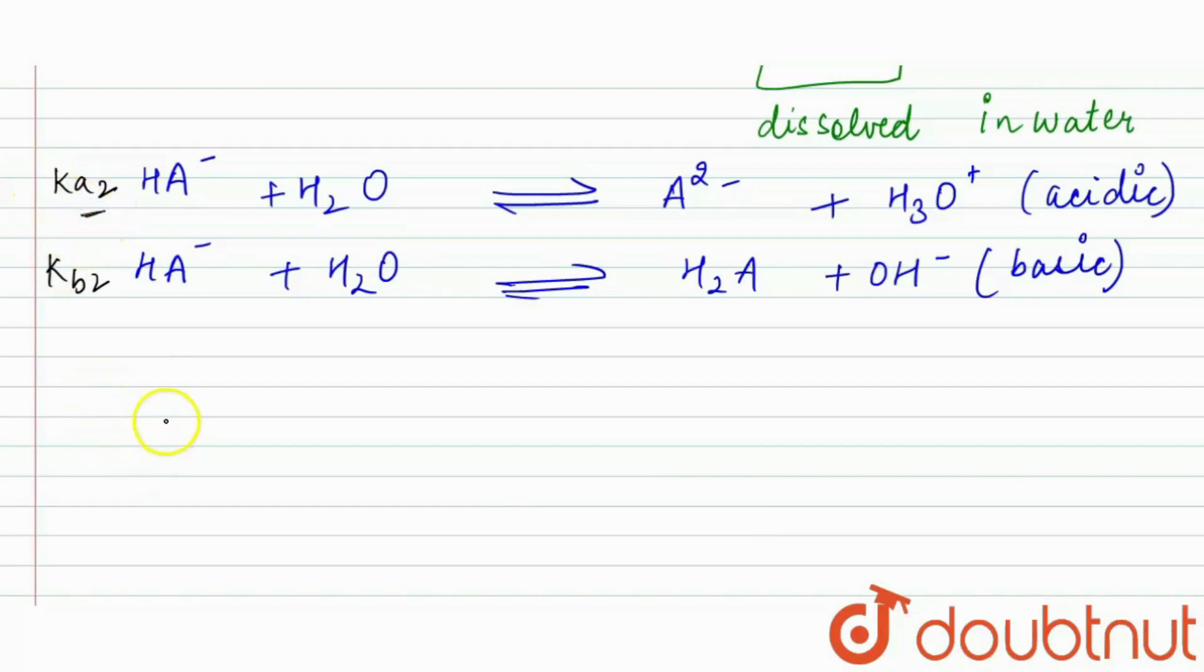From here we have Ka2 is equal to [H3O+][A2-] upon [HA-], and Kb2 will be, because water is neglected in these cases, [H2A][OH-] upon [HA-].